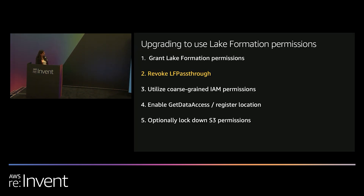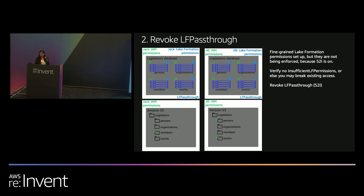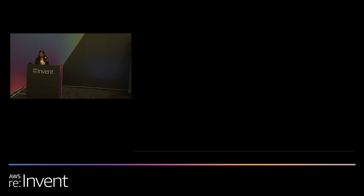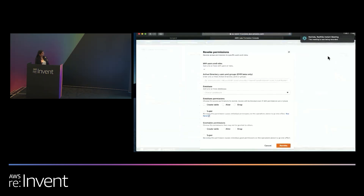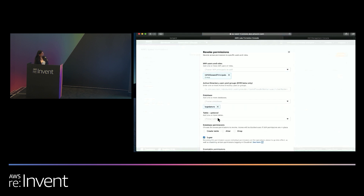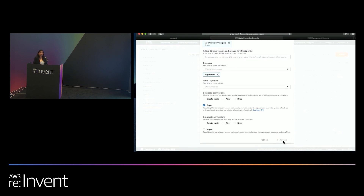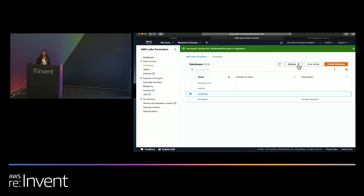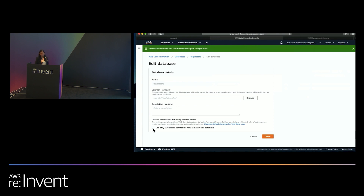Now that we've granted permissions to both users, we need to revoke the Lake Formation pass-through role, since it was only there to maintain access to existing Glue Data Catalog objects. The process is straightforward: go to the Lake Formation console, click the revoke button, identify the principal named IAM allowed users, select the database and all tables, then click revoke. Once done, the LF pass-through no longer exists and we've cut ties with the old Glue Data Catalog.